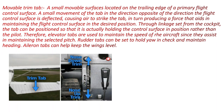Now look at the picture. On the left side, there is a trim tab located at the trailing edge of the elevator. On the right side, there is a control wheel in the cockpit which is used to control the movement of the trim tab. There are two positions on the control wheel: nose down trim position and nose up trim position.